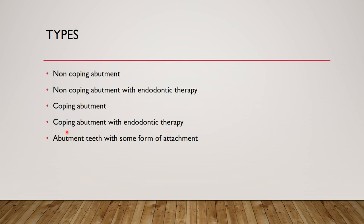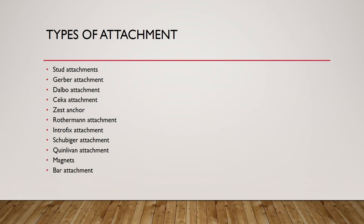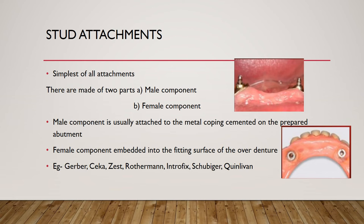The types of overdentures to be covered are: non-coping abutment, non-coping abutment with endodontic therapy, coping abutment, coping abutment with endodontic therapy, and abutment teeth with some form of attachment. There are 10 to 12 different types of attachments — the most important are stud attachment, bar attachment, and magnet attachment.